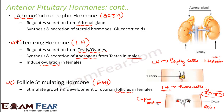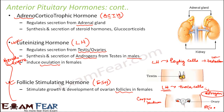We see that luteinizing hormone and the follicle stimulating hormone both stimulate gonadal activity — that is the female gonads, the sexual organs. It helps in the growth and development of the sexual organs, and that is why both of them together are known as gonadotropins. Because of their functions, they are called gonadotropins — LH and FSH.